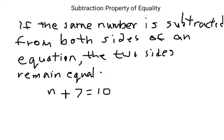So when we're talking about subtraction, we would say if the same number is subtracted from both sides of an equation, the two sides remain equal. So there's sort of a standard way of solving these equations. First you copy the equation. So I've already copied this one down, n plus 7 equals 10. So that's step number one of three steps.